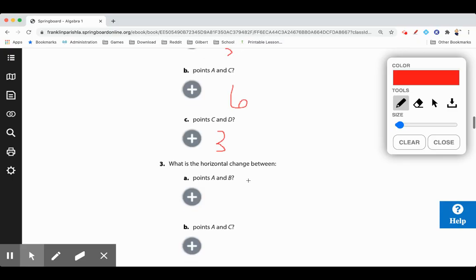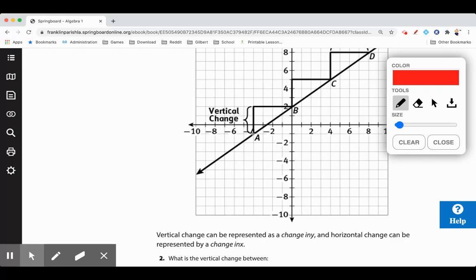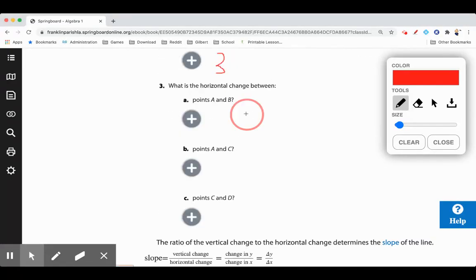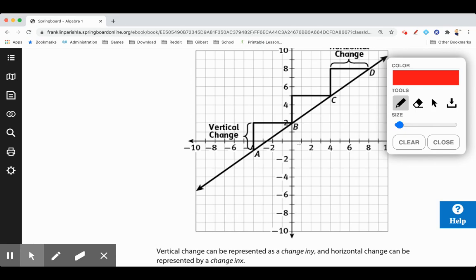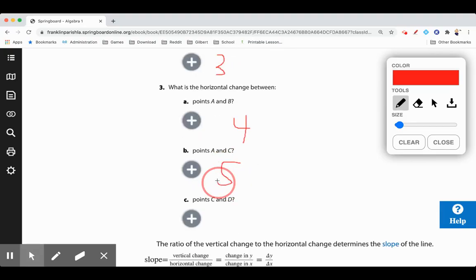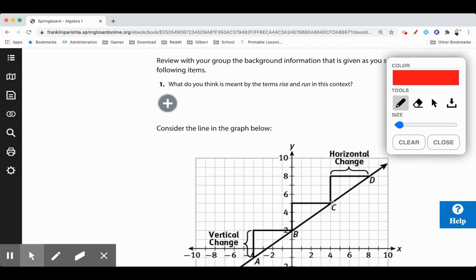What is the horizontal change? Well horizontally left and right? 1, 2, 3, 4. Between A and B is 4. Between A and C, 4, 5, 6, 7, 8. And then point C and D, horizontally 1, 2, 3, 4.